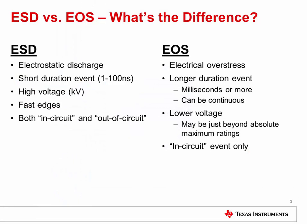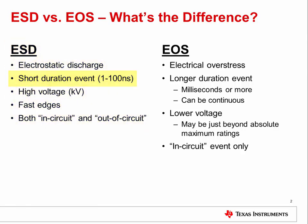First, let's compare ESD and EOS. We discussed ESD in detail in TIPL 1401. ESD, or electrostatic discharge, is the sudden flow or discharge of static charge between two oppositely charged objects. ESD is a very short event, typically in the nanoseconds. The voltage of an ESD event can be quite high, in the kilovolts, and the pulses can have very fast edges. ESD damage can happen both in circuit and out of circuit.